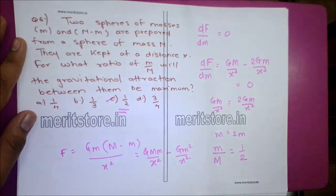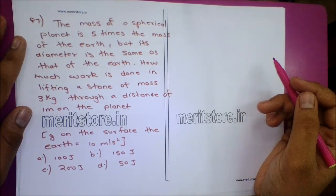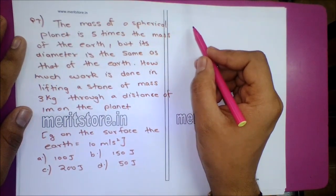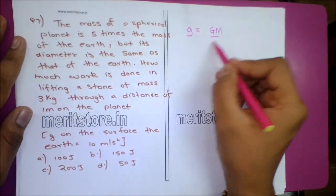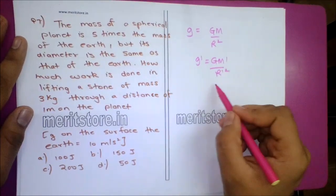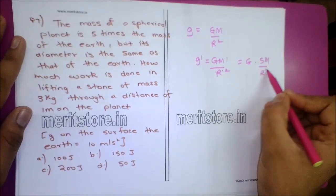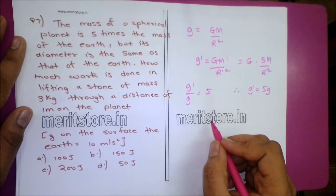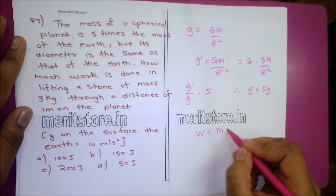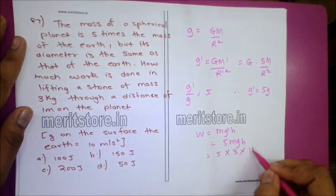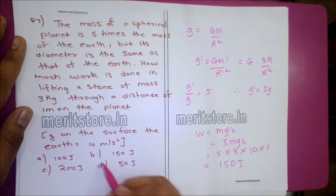Question 7: The mass of a spherical planet is 5 times the mass of Earth, but its diameter is the same. How much work is done in lifting a stone of mass 3 kg through 1 meter on the planet? g' = G(5M)/R² = 5g. Work done W = mg'H = 5mgH = 5 × 3 × 10 × 1 = 150 joules. Option B, 150 joules, is the correct answer.